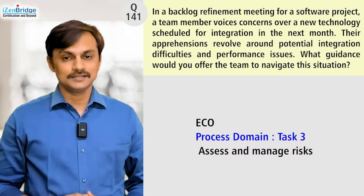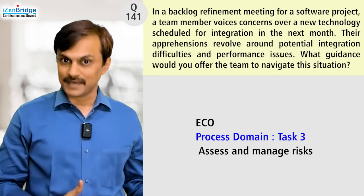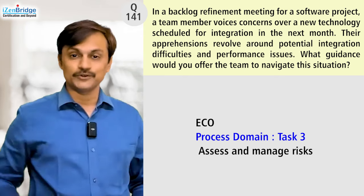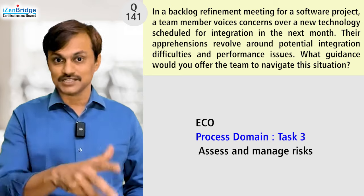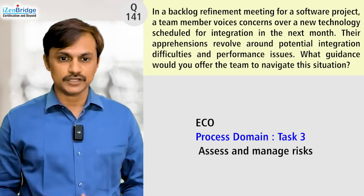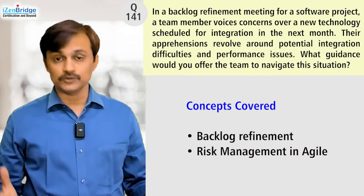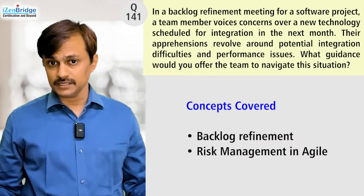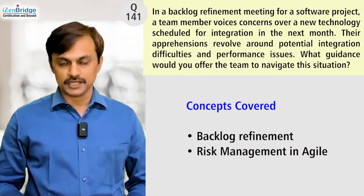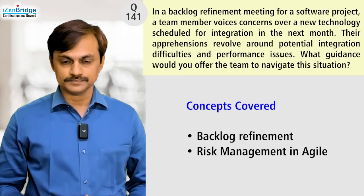The ECO task this maps to is simply 'assess and manage risk' — but it's the agile way of doing it: Task 3 of the Process domain. The topics explored in this question are backlog refinement and risk management using agile ways of working.